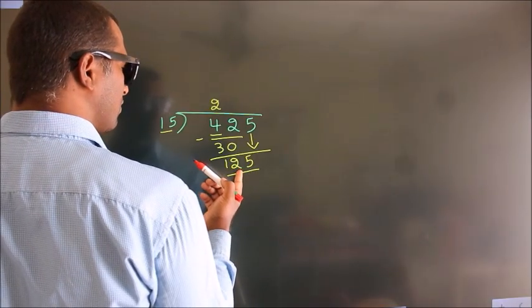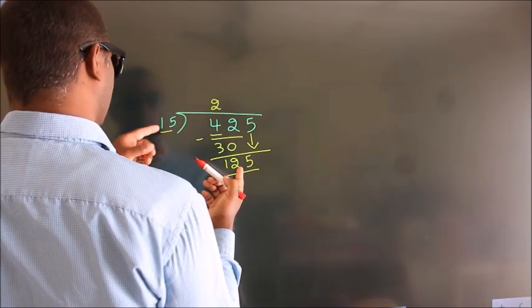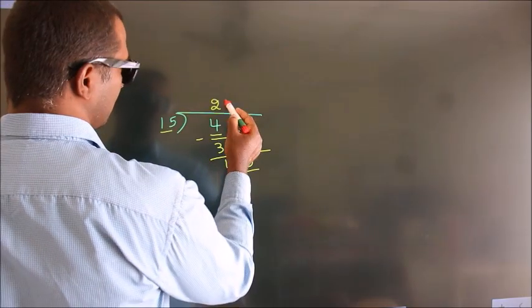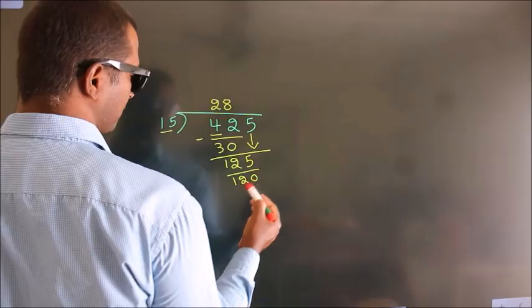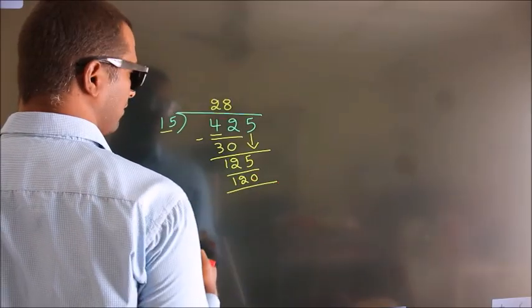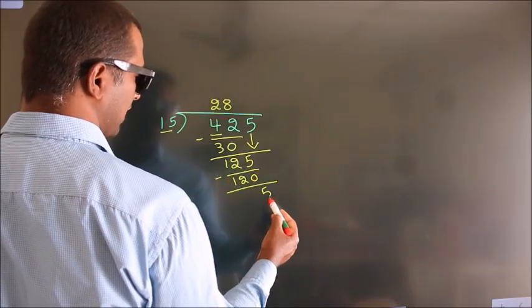A number close to 125 in the 15 times table is 15 times 8, which is 120. Now we subtract. We get 5.